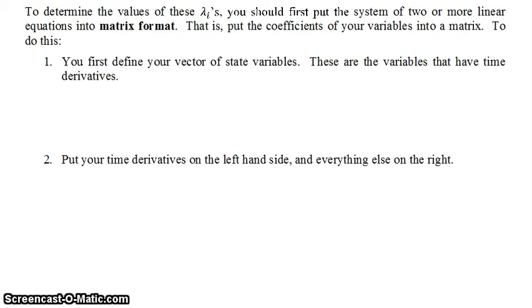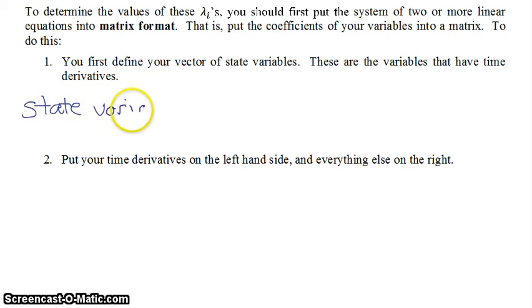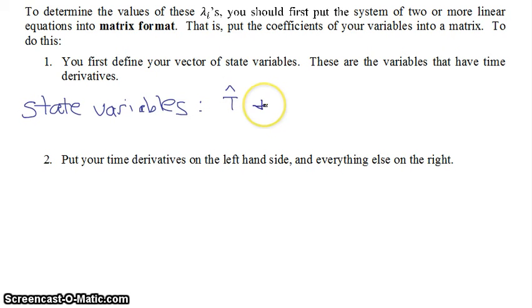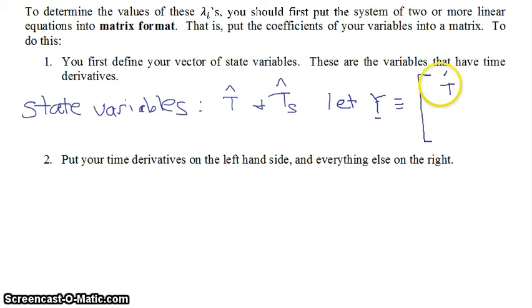First, you define your vector of state variables — that is, what are your variables in your system? There's a very important distinction to be made between state variables and other variables which may serve as inputs to your system. The state variables are the ones that you have differential equations for. In this case, they would be T hat, the temperature, and T-sensor hat, the temperature sensor value — both deviation variables. So we define our vector of state variables y as having T hat as the first element and T-sensor hat as the second element.